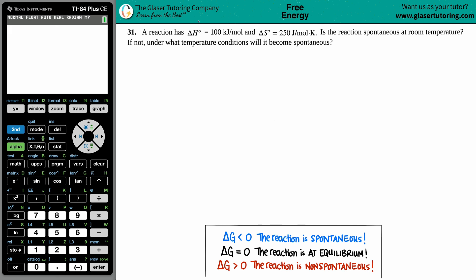Number 31. A reaction has a delta H notch of 100 kilojoules per mole and a delta S notch of 250 joules per mole times Kelvin. Is the reaction spontaneous at room temperature? And if not, under what temperature conditions will it be spontaneous?